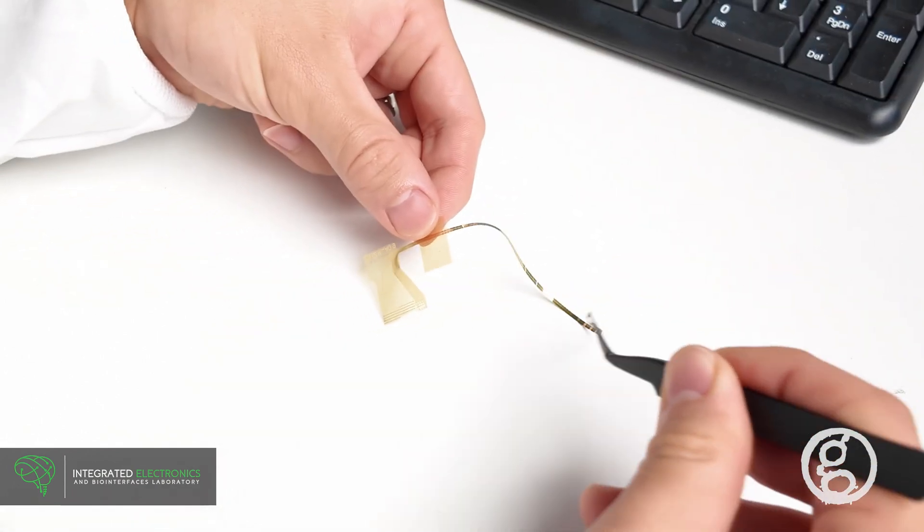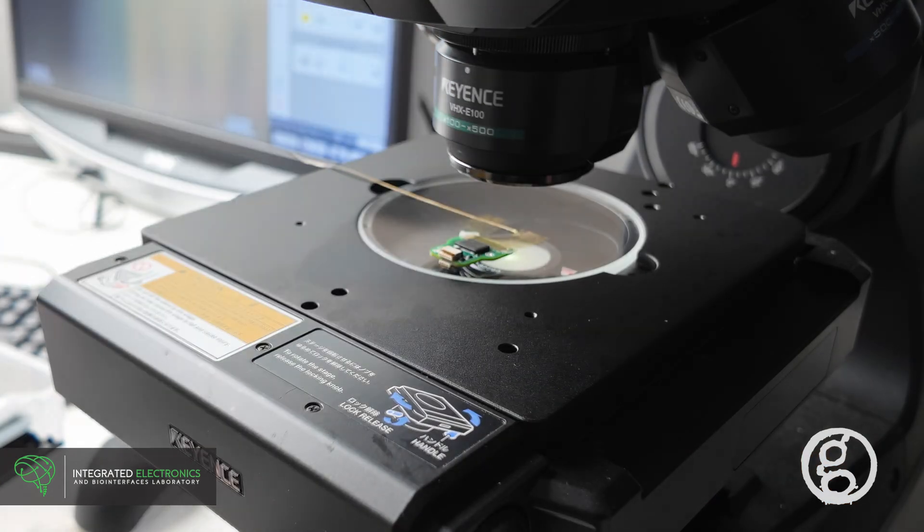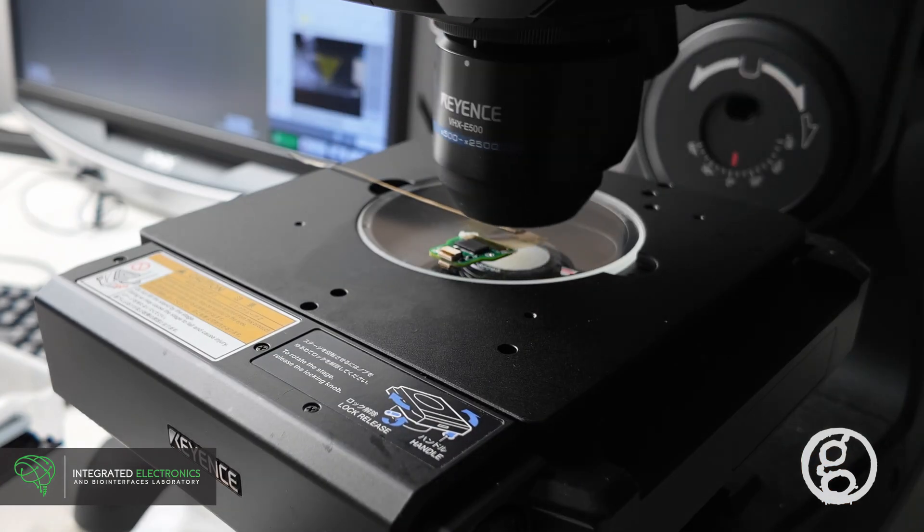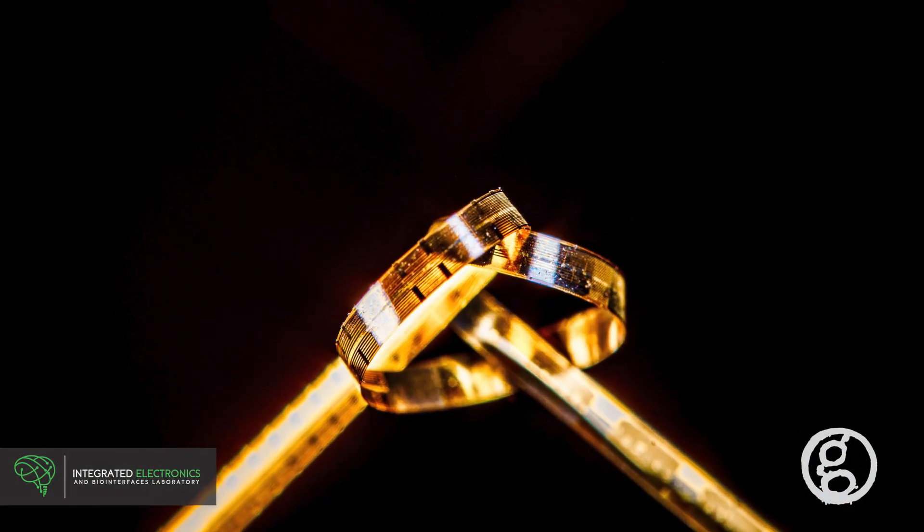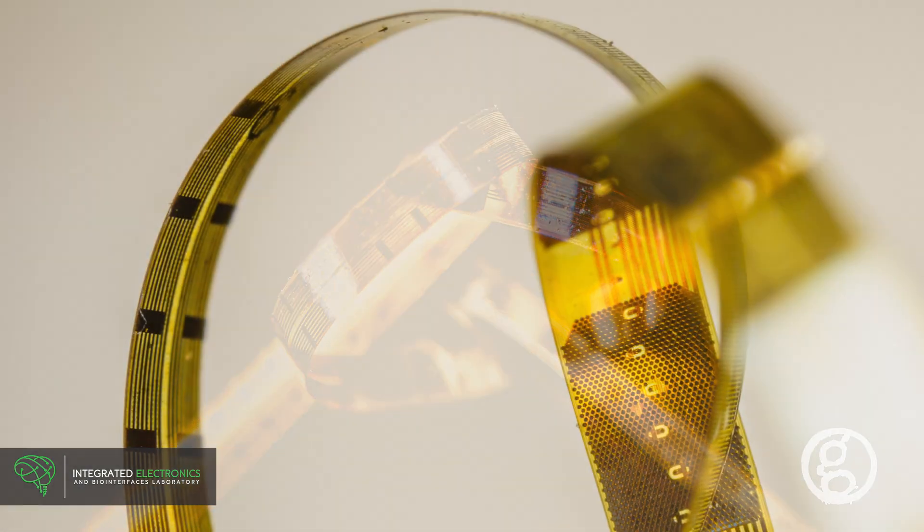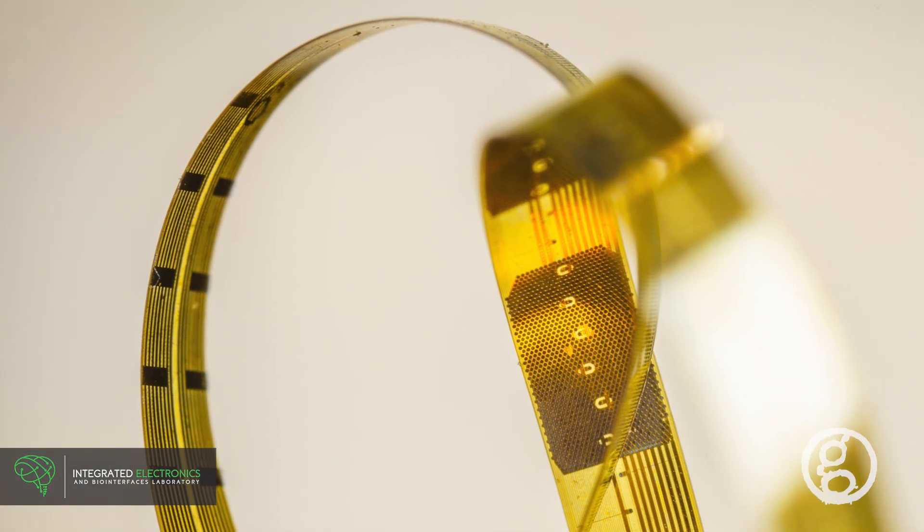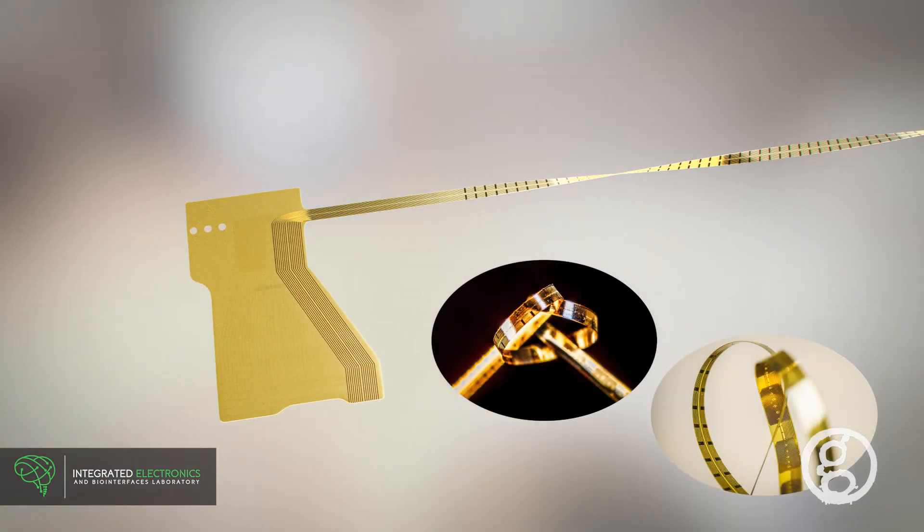It is ultra-thin and flexible. It has 128 microelectrodes which record brain activity. It also has 16 macroelectrodes that stimulate the brain with tiny pulses of electric current. This electrode is incredibly thin, just one-fifth the width of a human hair, and is highly flexible.